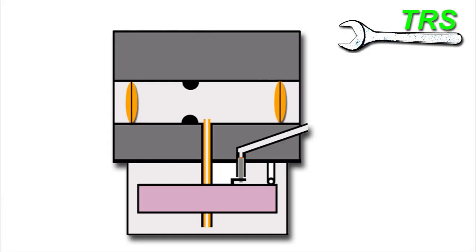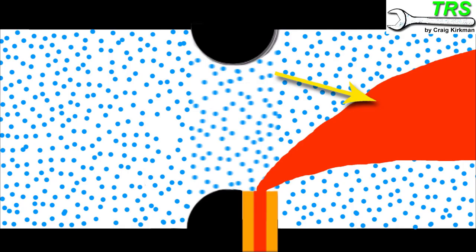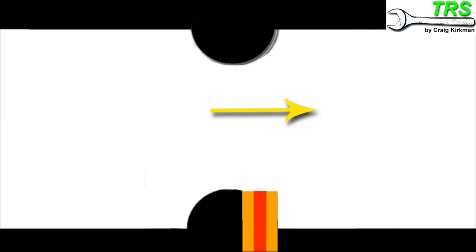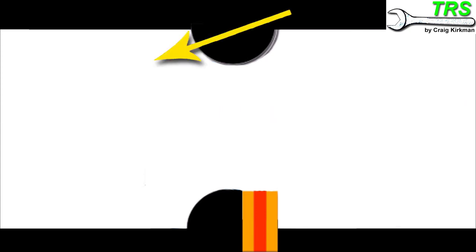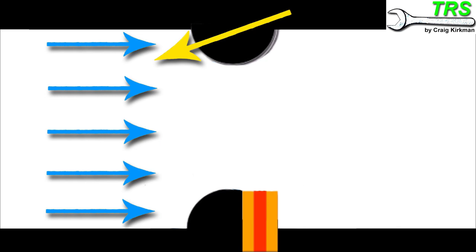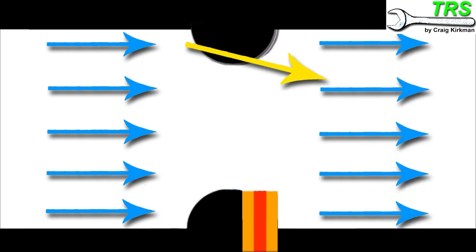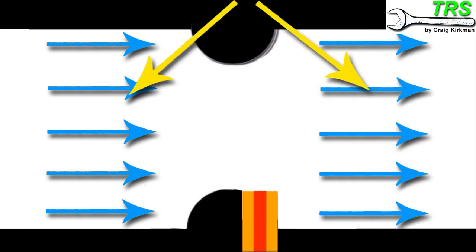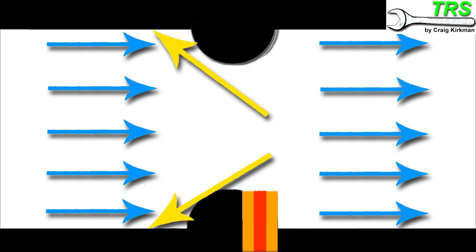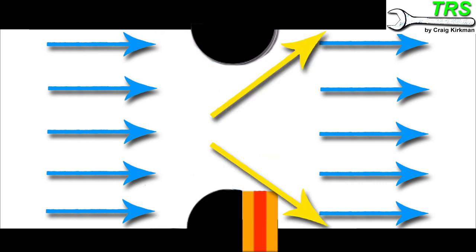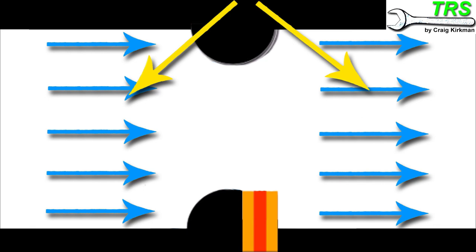In order to explain how the carburetor transforms this liquid gasoline fuel into a form combustible by the engine, I'll have to explain how the carburetor's induction tube works. When air is drawn into the induction tube on its way into the engine, it passes this restriction in the Venturi. After it's done so, the air on both sides of this restriction is moving at exactly the same speed — providing the tube on each side is the same size and carries the same volume of air.